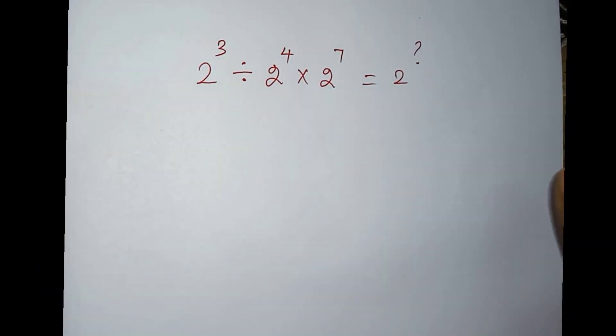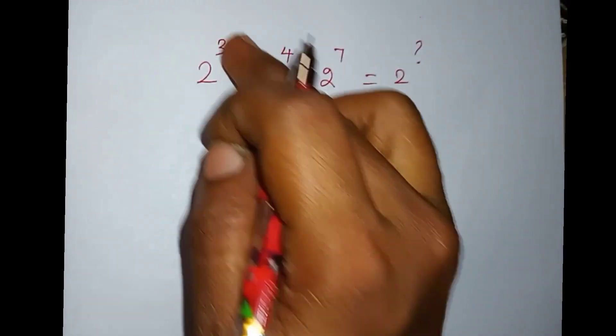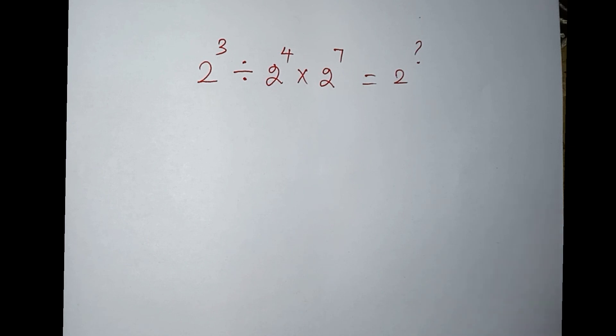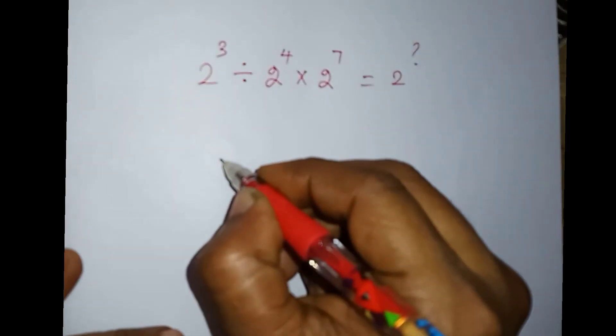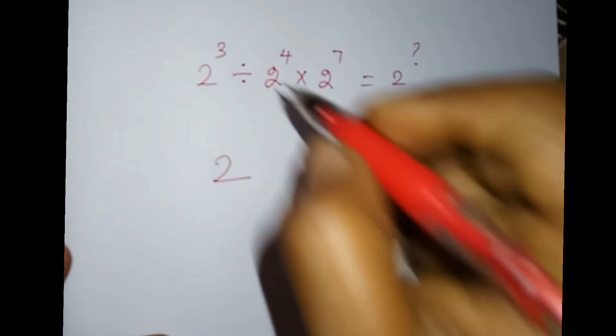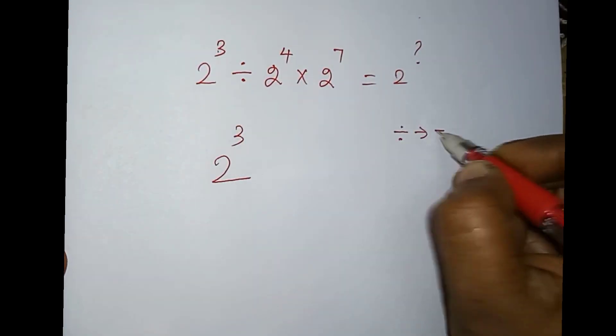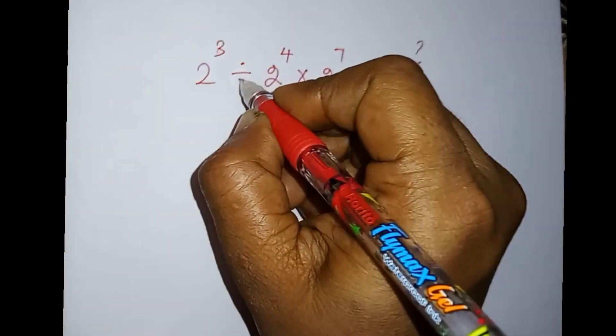Now we have to answer 2 power 3 division 2 power 4 into 2 power 8 equals 2 power what. With the same number base, division is minus and multiplication is plus.